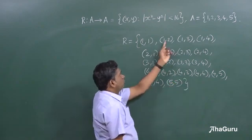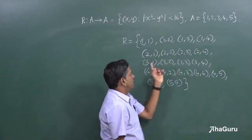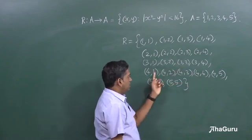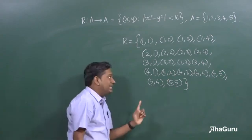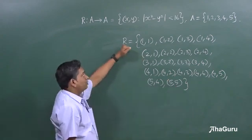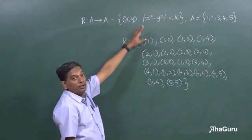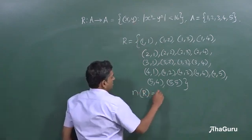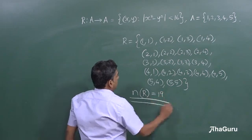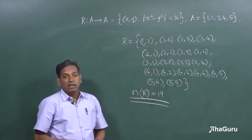So, we have 1, 2, 3, 4, 5, 6, 7, 8, 9, 10, 11, 12, 13, 14, 15, 16, 17, 18 and 19 elements which are part of the relation. Overall, A cross B is going to have 5 into 5, 25 elements. So, N of R is 19 and these are the 19 elements in the relation.